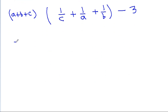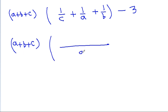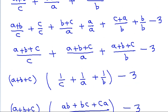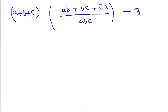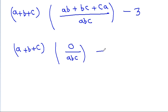Taking abc as common in the bracket, we get (a + b + c) times (ab + bc + ca) / abc, minus 3. We have given that ab + bc + ca is equal to 0. So we have (a + b + c) times 0 divided by abc, minus 3. And 0 times anything is 0, so the result is 0 minus 3.